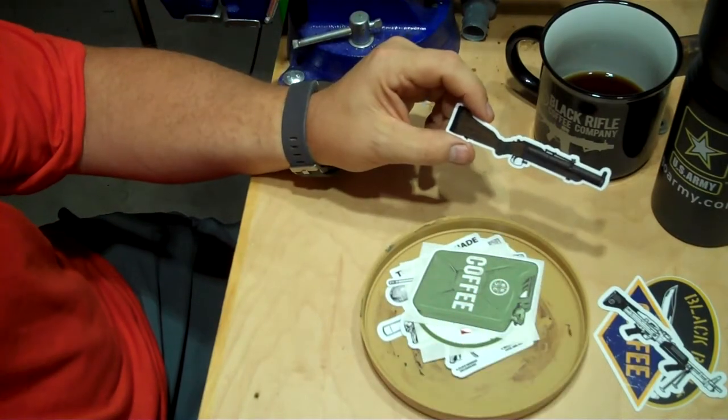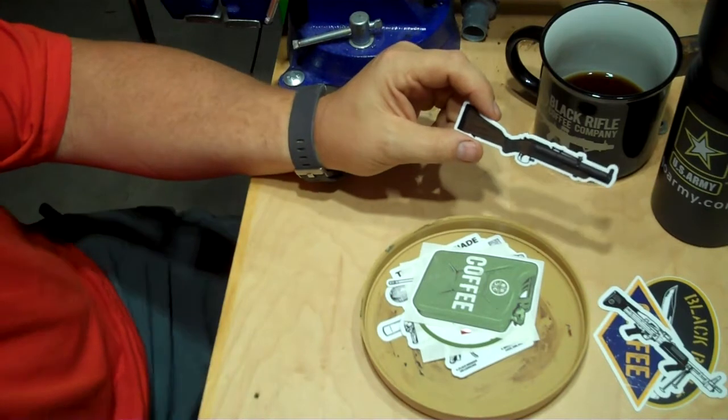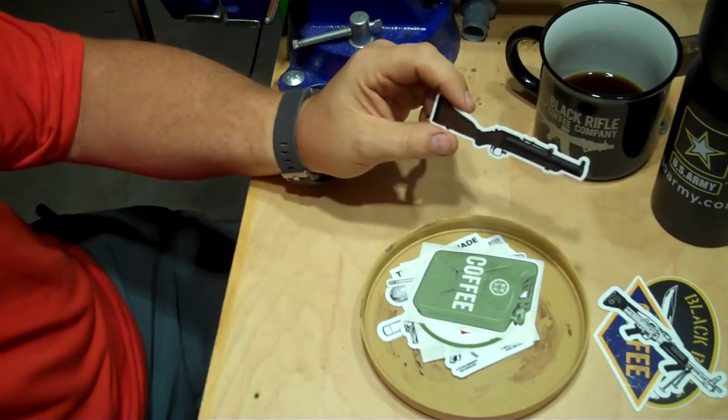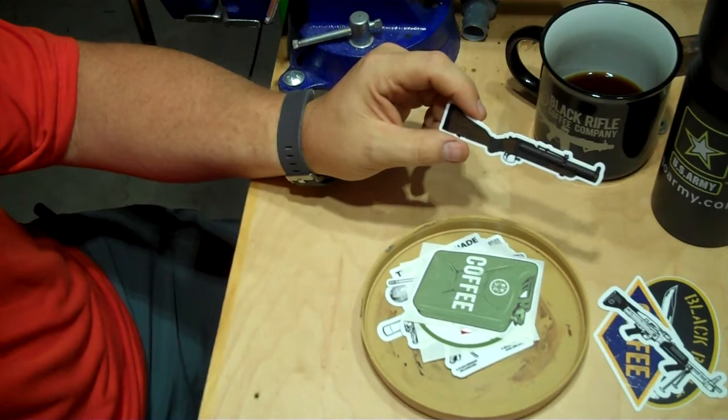And this pew-pew is more like a boom-boom or a bloop. The old bloop gun. The M79. But that's a cool sticker.